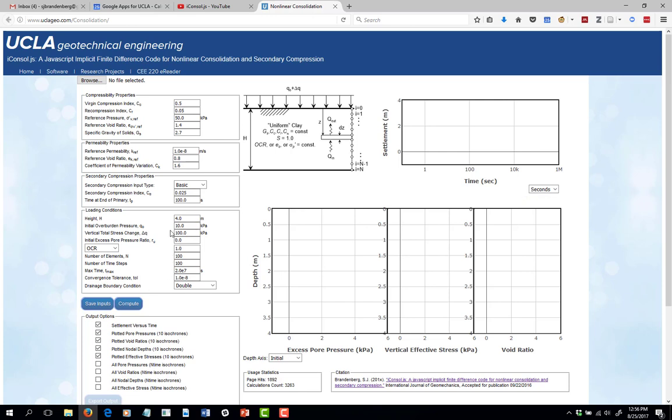Moving on to the last input set here. You have the height of the layer H. Notice that H is not the drainage path length here. Technically, the drainage path length can't really be defined for a nonlinear soil because the pore pressure isochrones are not symmetric anymore and the drainage path length actually may evolve with time. This is just the layer thickness, not half the layer thickness if you have free drainage at the top and the bottom of the layer.